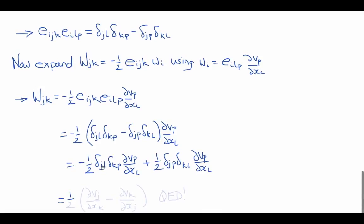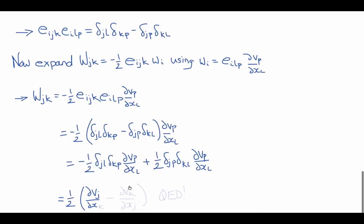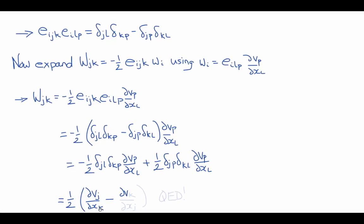Now expanding this out, we'll get minus one-half delta jl delta kp times del vp del xl minus, so plus one-half delta jp delta kl times del vp del xl. This substitutes l to j, p to k, j to j, and l to k to give us minus one-half del vk del xj minus del vj del xk, which is our original definition of the components of the spin tensor. So this is the result that we wanted. We've now proven this expression relating the components of the spin tensor to the components of the vorticity vector through the permutation symbol E.